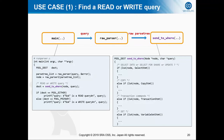First, let's look at use case one: finding whether a query is a read or write query. You can see the main test program. First, we pass the client query to the raw_parser function, which is imported from Postgres. By using this function, we can get a list of raw parse trees. Next, we pass the parse tree to the send_to_where function, which is a function in PGPool used to decide the load balancing destination node.